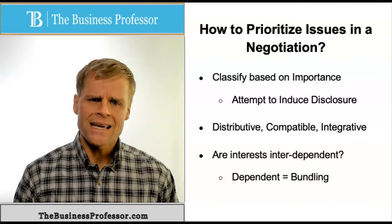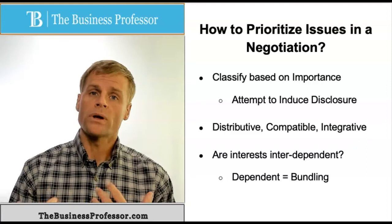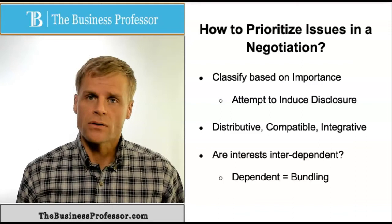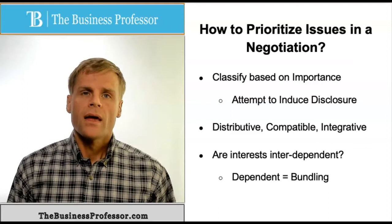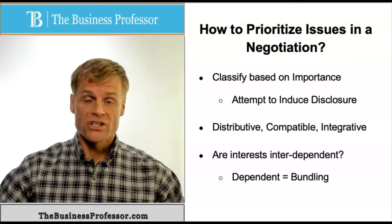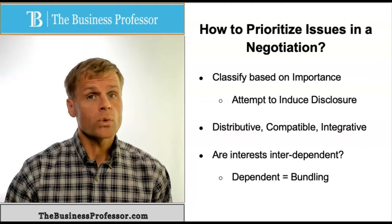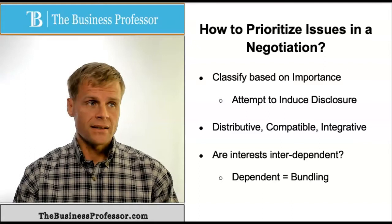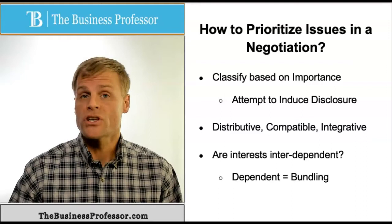Distributive interests are going to be more difficult to achieve some level of concession in, or some level of agreement upon. A compatible interest means that you're both going in the same direction — you want the same outcome for the interest. The problem is that oftentimes parties don't realize that interests are compatible, so they end up arguing for an outcome that's not in their best interest, and it ends up hurting both parties.